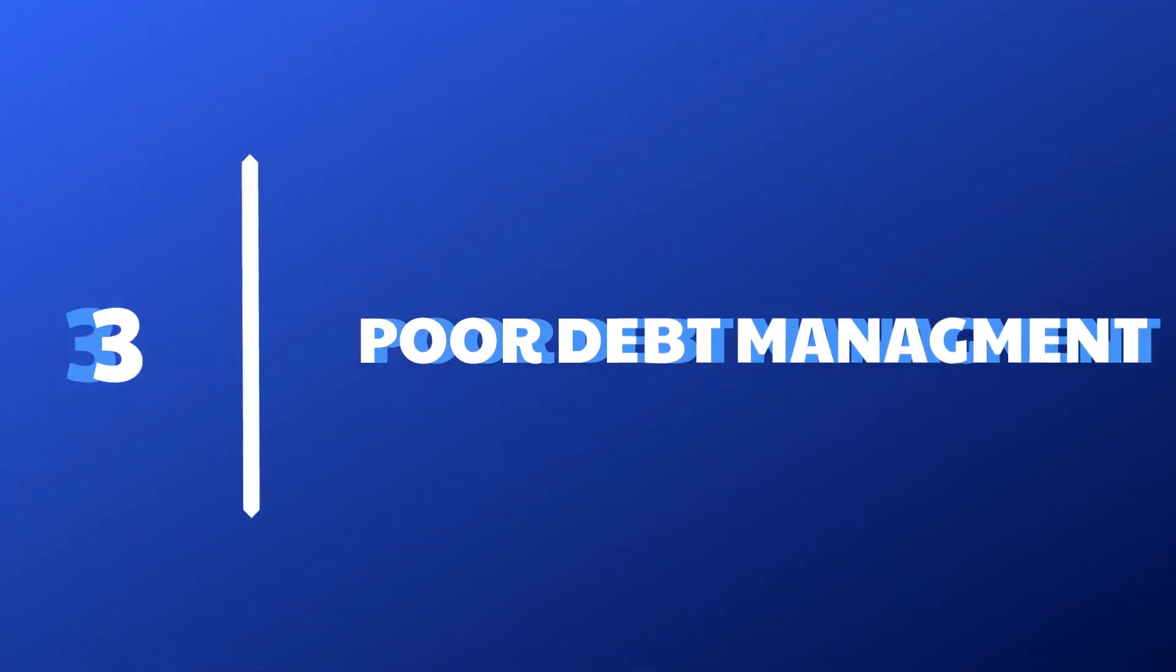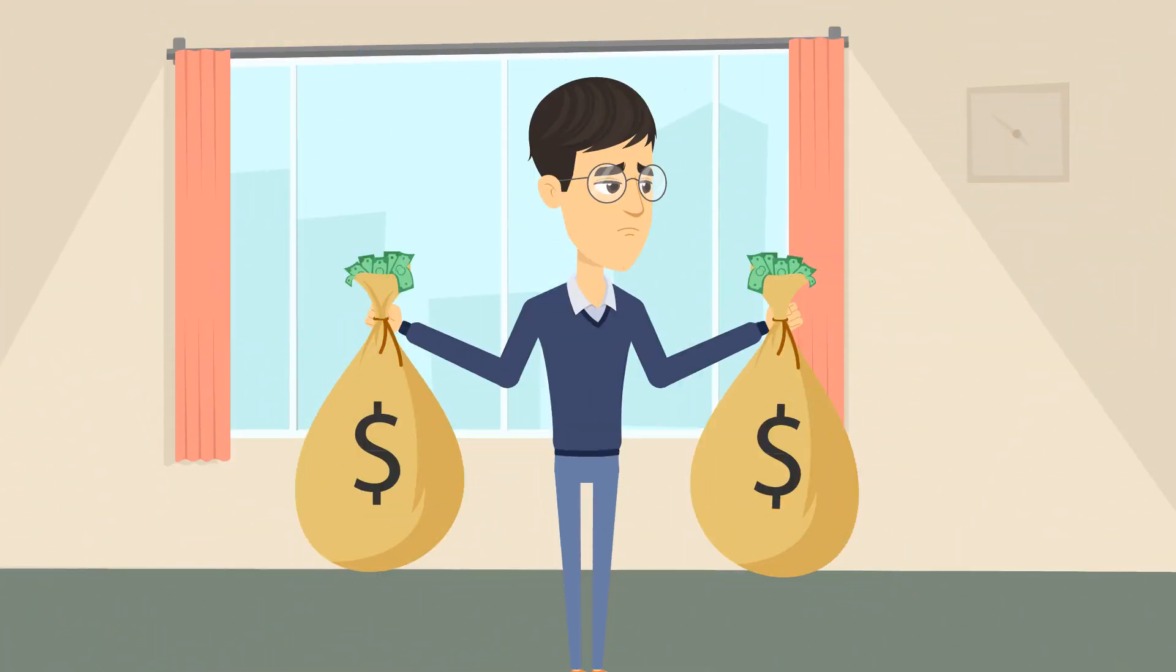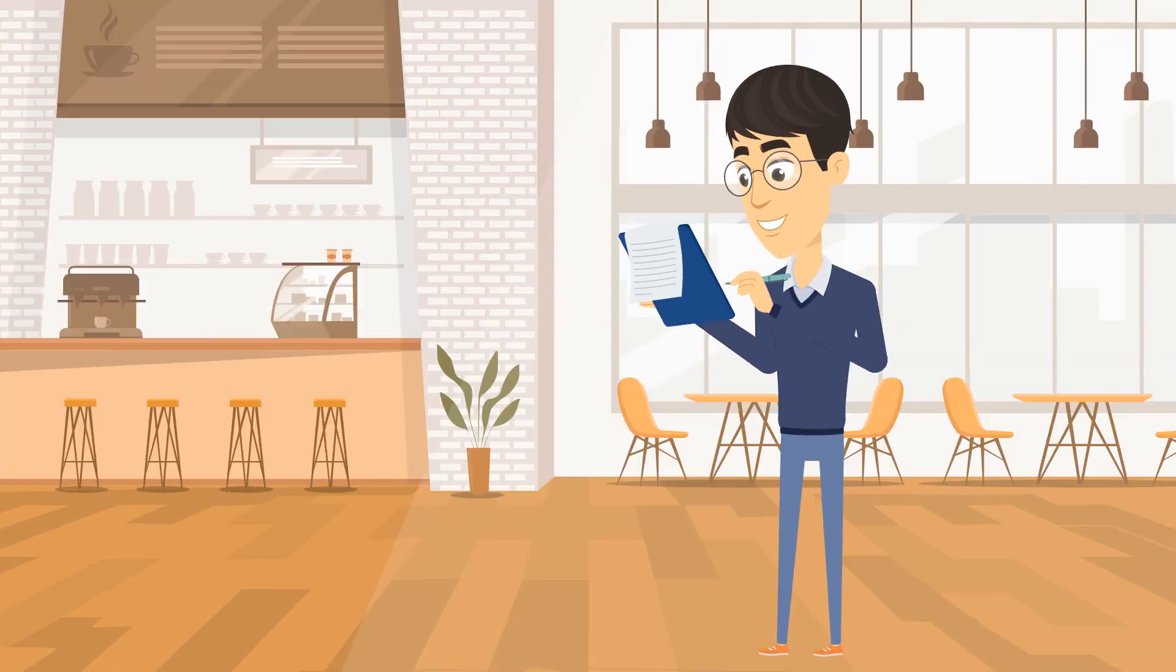Number 3: Poor Debt Management. Wealth building can't happen until you get full control of your debt. It's one of the most fundamental things you need to account for when building out your financial plan.